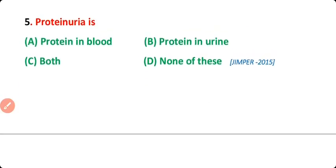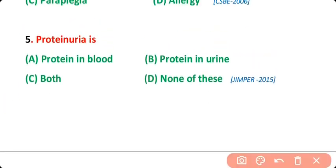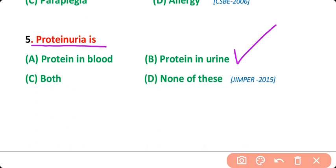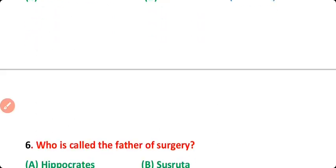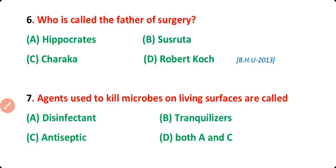Question number 5: Proteinuria is protein in the blood, protein in the urine, both A and B, or none of these? The correct answer is option B. Proteinuria is the presence of protein in the urine.